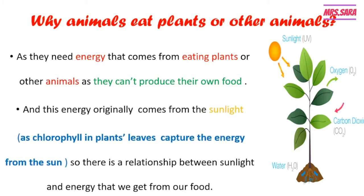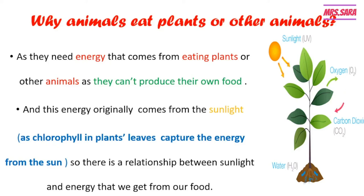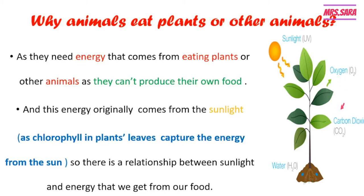In the photosynthesis process, the leaves of the plant have a substance called chlorophyll. Chlorophyll captures sunlight energy, and in the presence of carbon dioxide and water, the sunlight allows the combination of carbon dioxide and water to make glucose — the food of the plants. So there is a relationship between sunlight and the energy we get from food, since plants get their energy from sunlight.